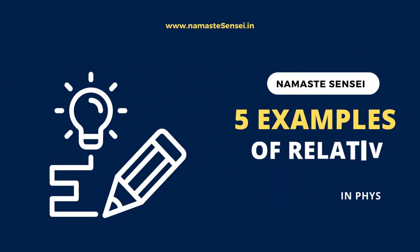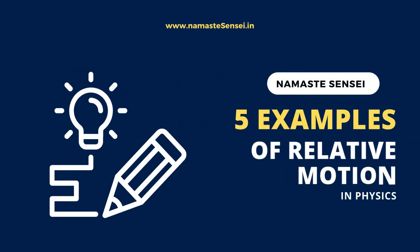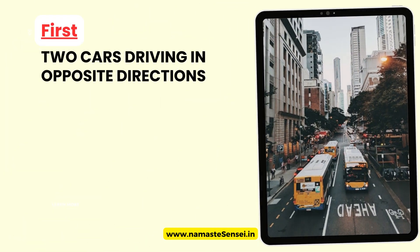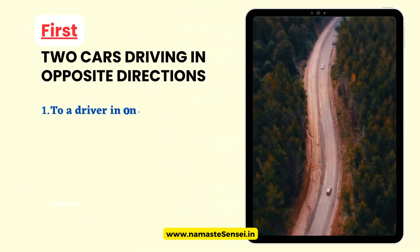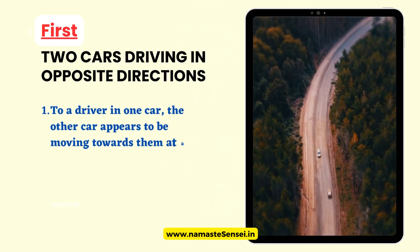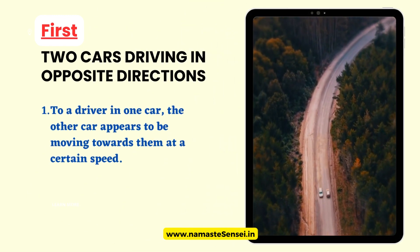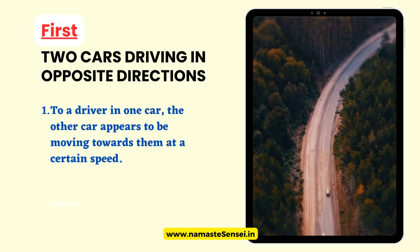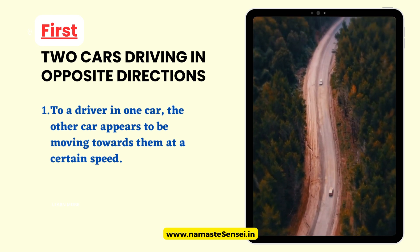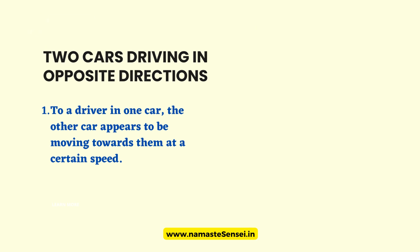5 Examples of Relative Motion in Physics. Our first relative motion example is when two cars drive in opposite directions on a highway at different speeds. To a driver in one car, the other car appears to be moving towards them at a certain speed. However, to a driver in the other car, their own car appears to be moving towards the other car at the same speed.